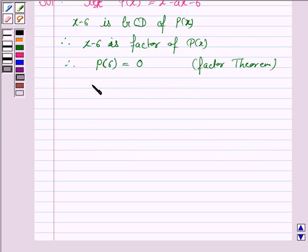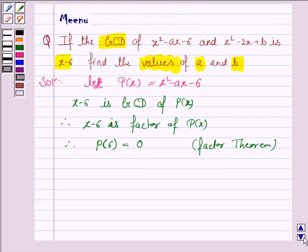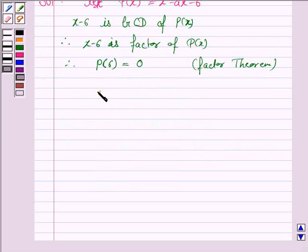So, now, P at x equals 6 is 6 squared minus 6 into a minus 6 is equal to 0.